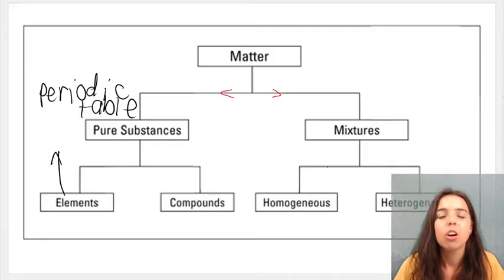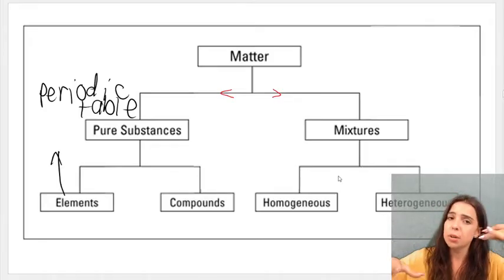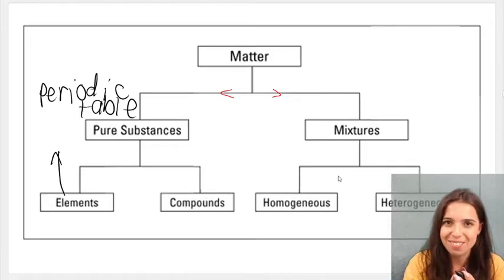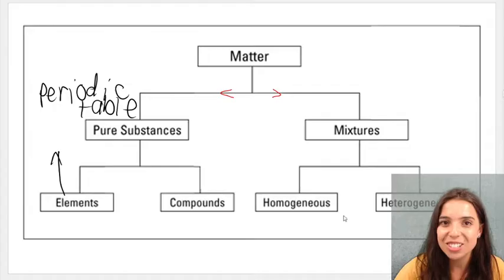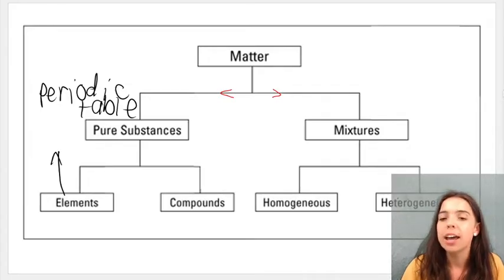That's pure substances. Mixtures, on the other hand, are when I take multiple pure substances, combine them to form a mixture. So I can get a homogenous or homogenous mixture, doesn't matter how you say it, a heterogeneous or heterogeneous mixture.